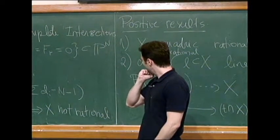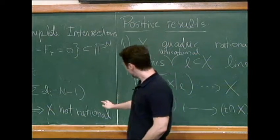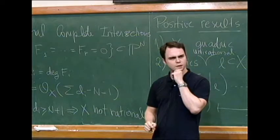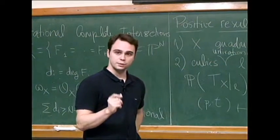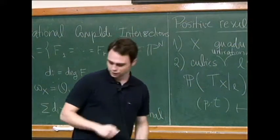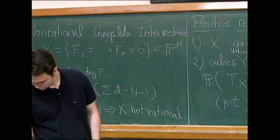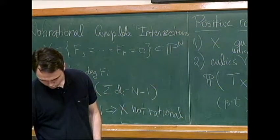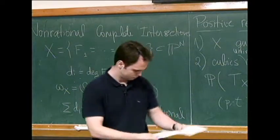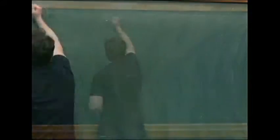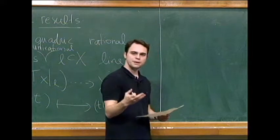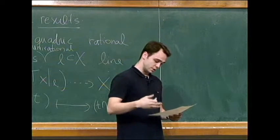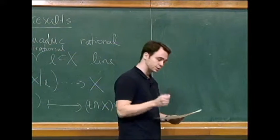So I want to tell you about non-rationality results for complete intersections, and in particular, hypersurfaces. So I will skip history. Things were in this uncomfortable state up until the 70s, and then there were three methods that were introduced that allowed people to prove non-rationality results. These were very impressive, and they continue to be developed to this day.